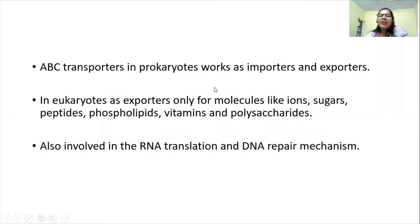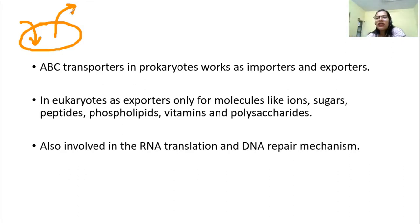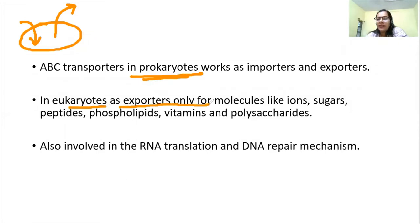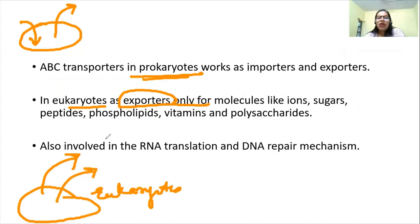In prokaryotes, ABC transporters work as both importers and exporters — they can take solutes in and also throw molecules out. Whereas in eukaryotes, they act as exporters only, always throwing molecules out of the cell. The molecules transported include ions, sugars, peptides, phospholipids, vitamins, and polysaccharides.